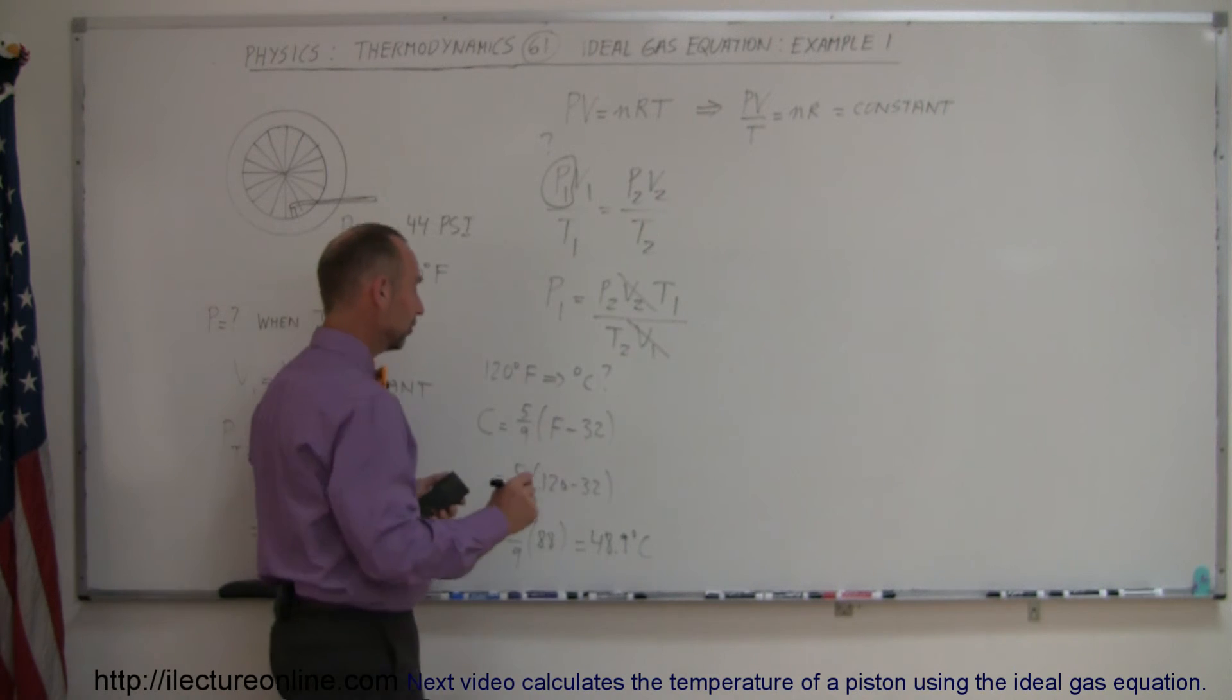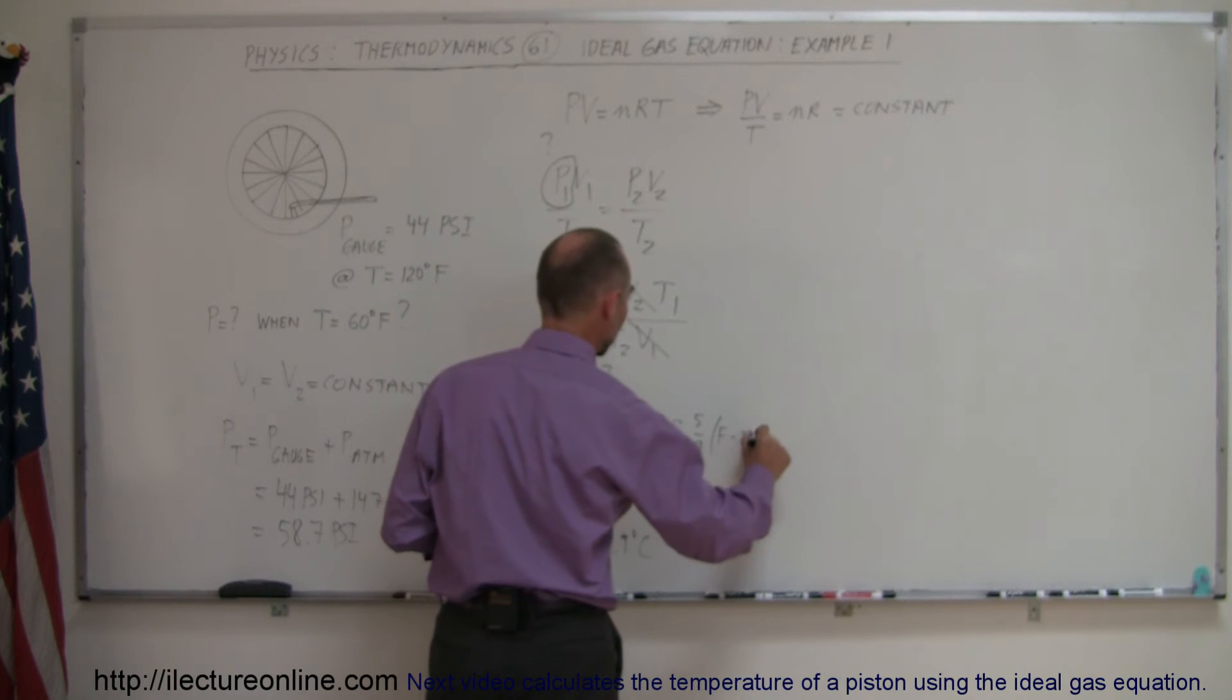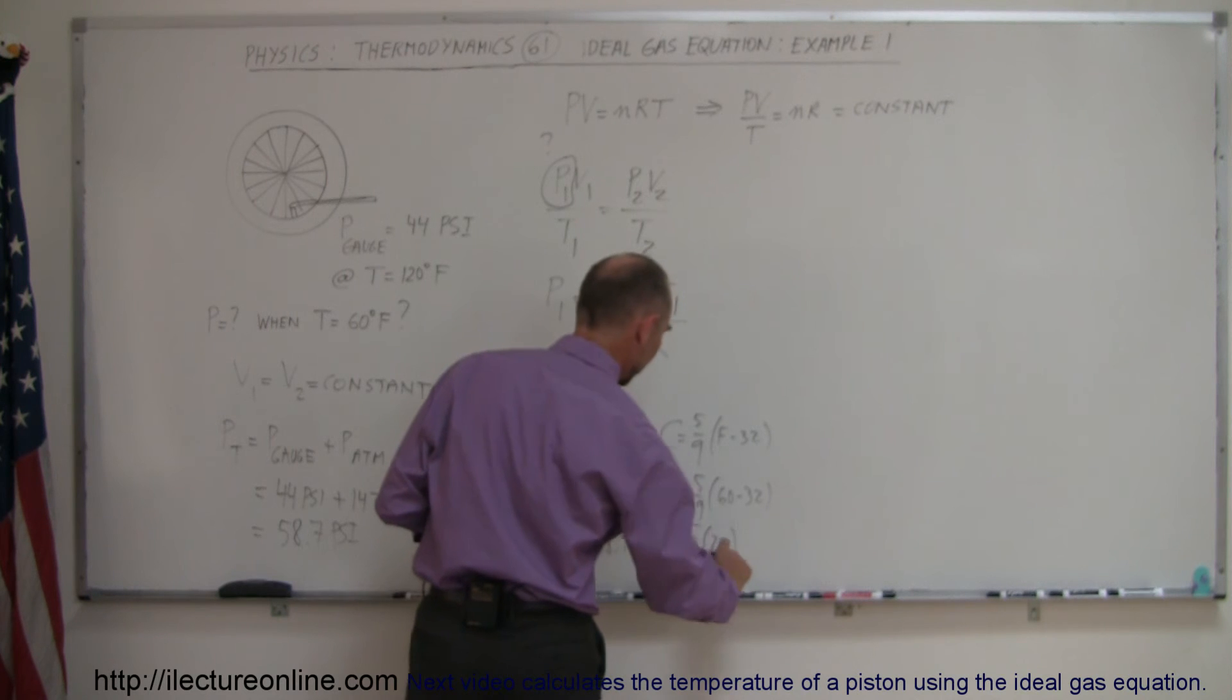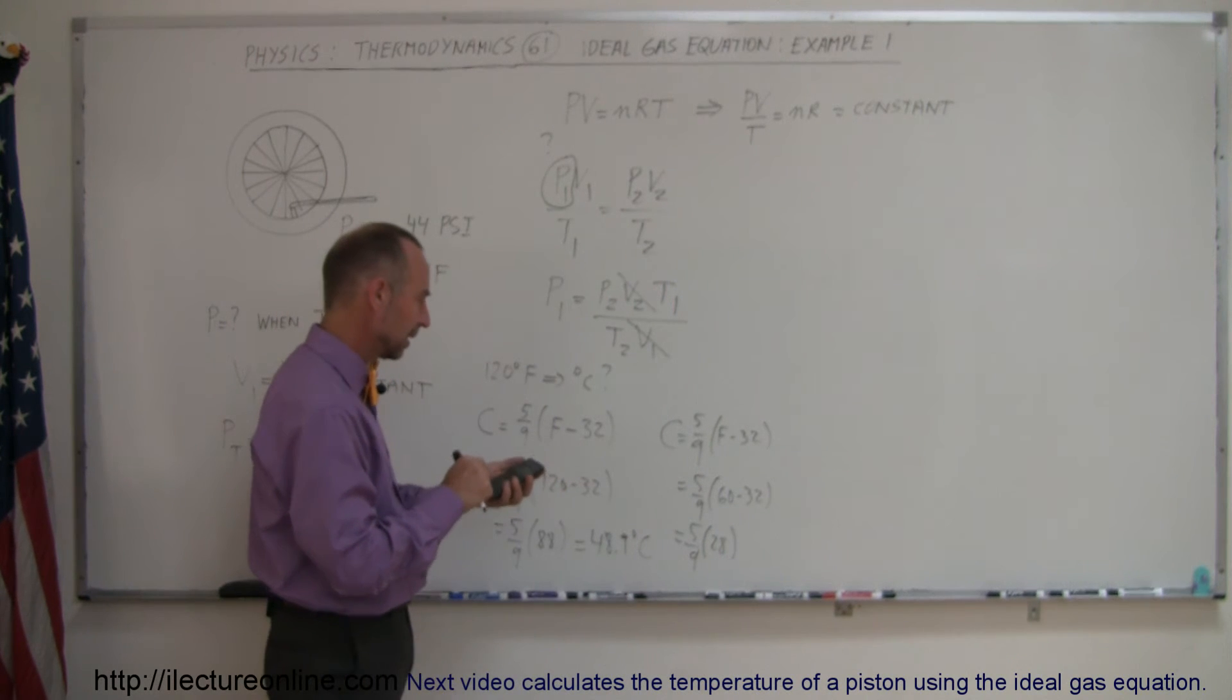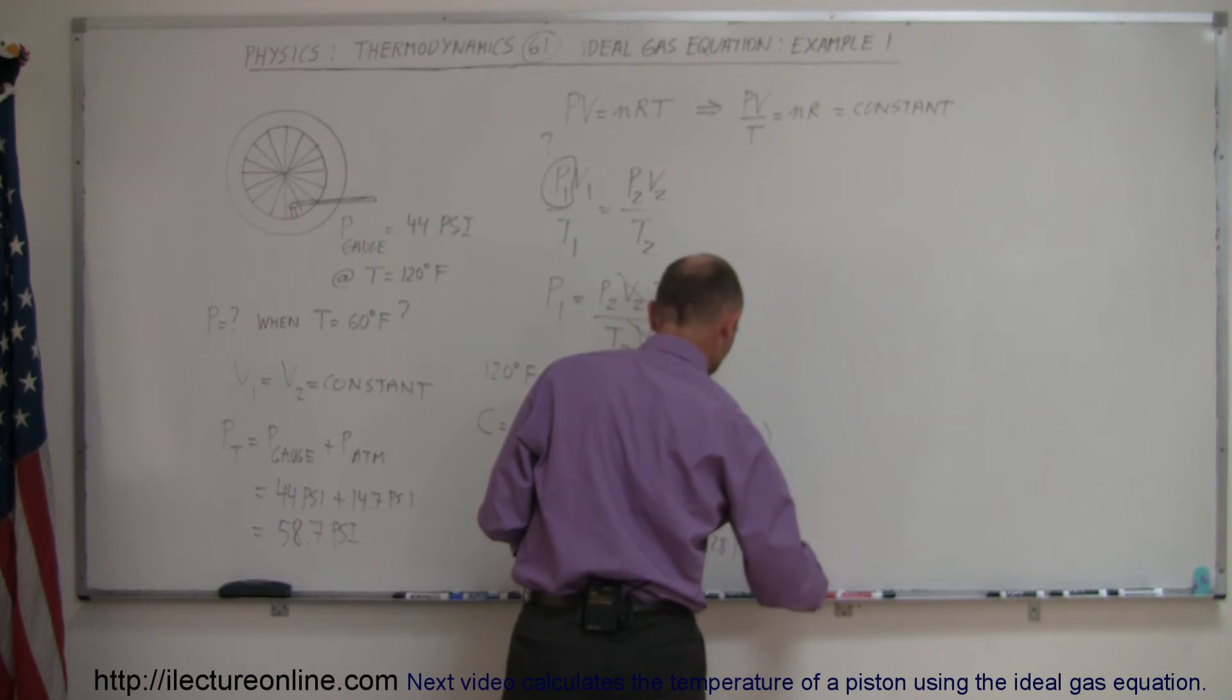Converting 60 degrees, we do the same thing. C is equal to 5 over 9 times F minus 32. And so that's equal to 5 over 9 times 60 minus 32. That's equal to 5 over 9 times 28. And so we get 28 divided by 9 times 5 equals 15.6 degrees. So 15.6 degrees centigrade.